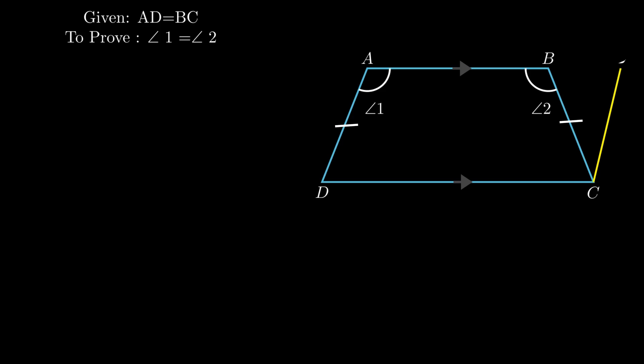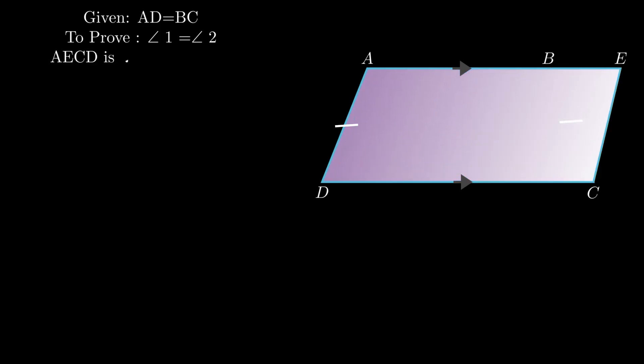In quadrilateral AECD, by construction the opposite sides are parallel. Therefore AECD is a parallelogram. As opposite sides of a parallelogram are equal, we conclude AD = EC.